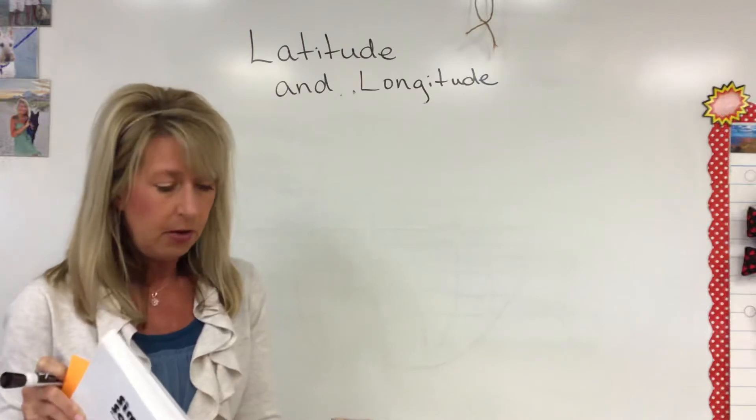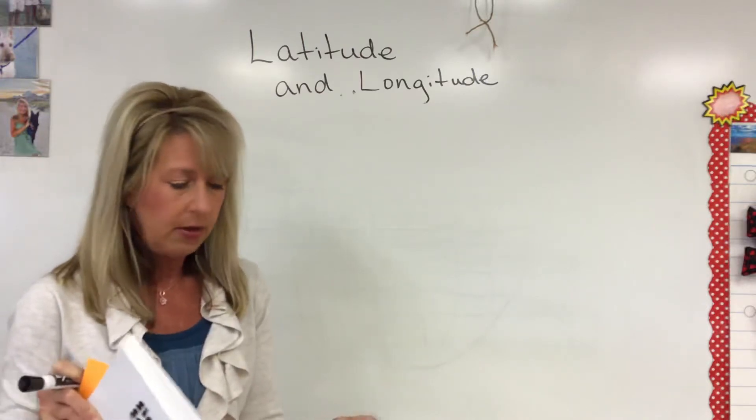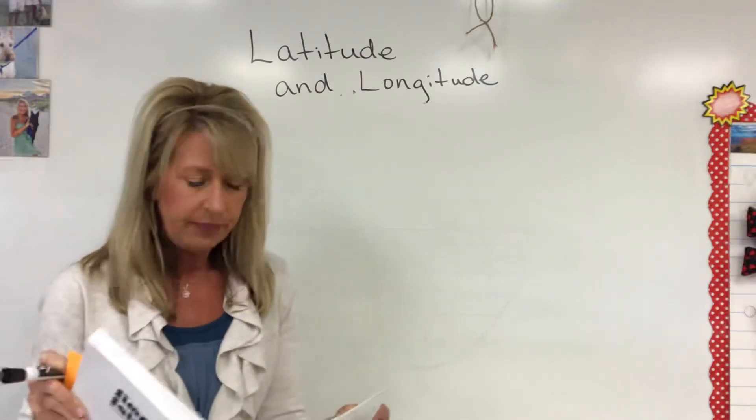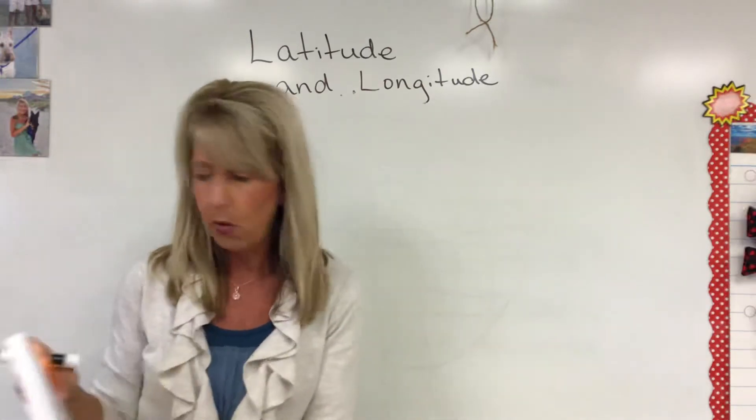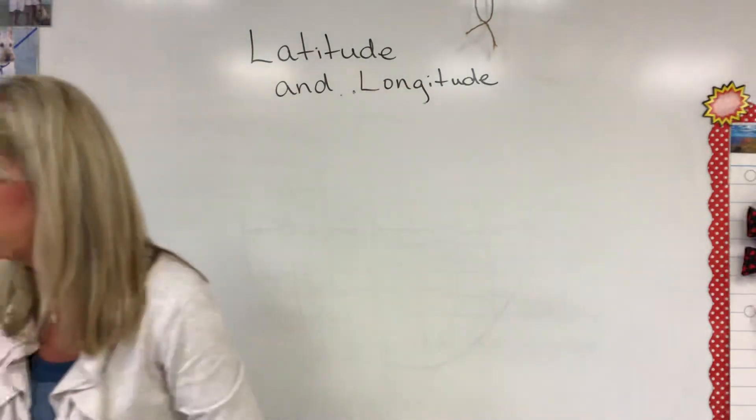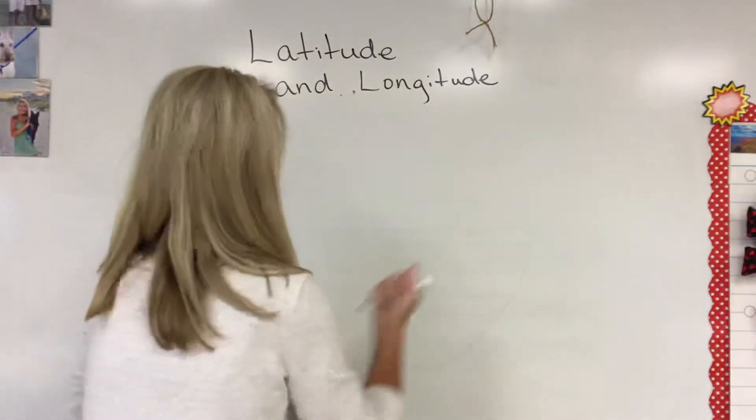Longitude lines run up and down, and as they circle the globe they intersect at the north and south poles. I'm gonna draw a quick little globe here.